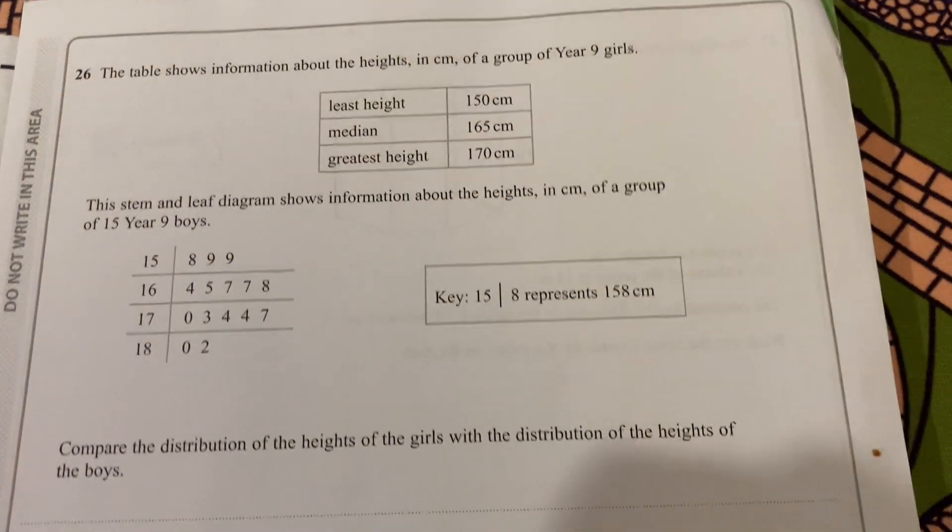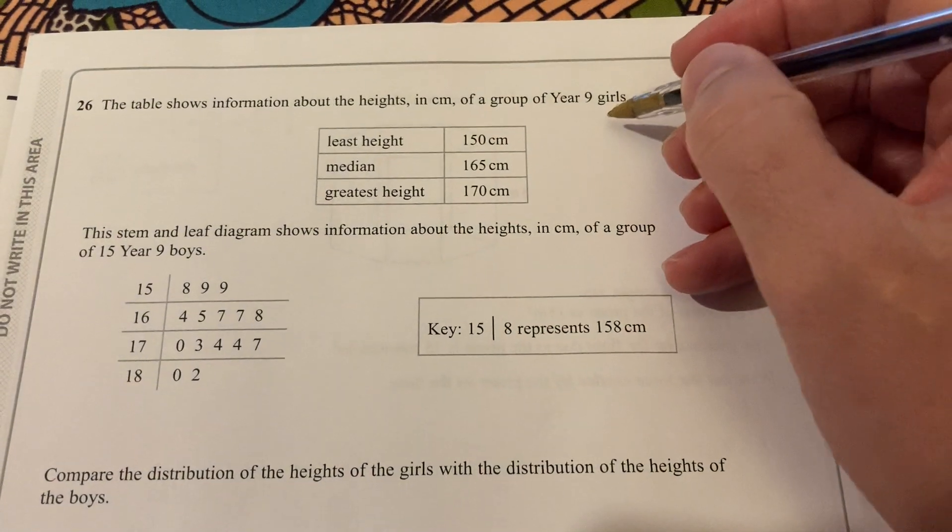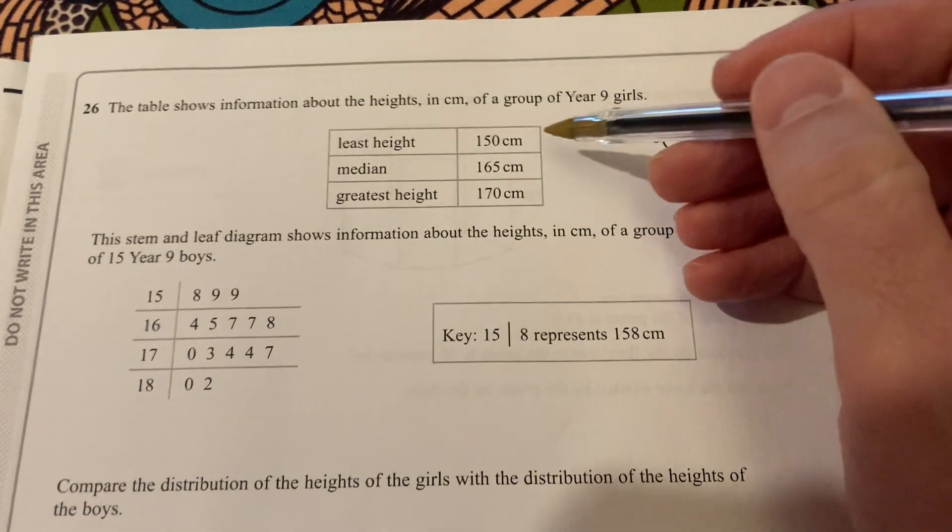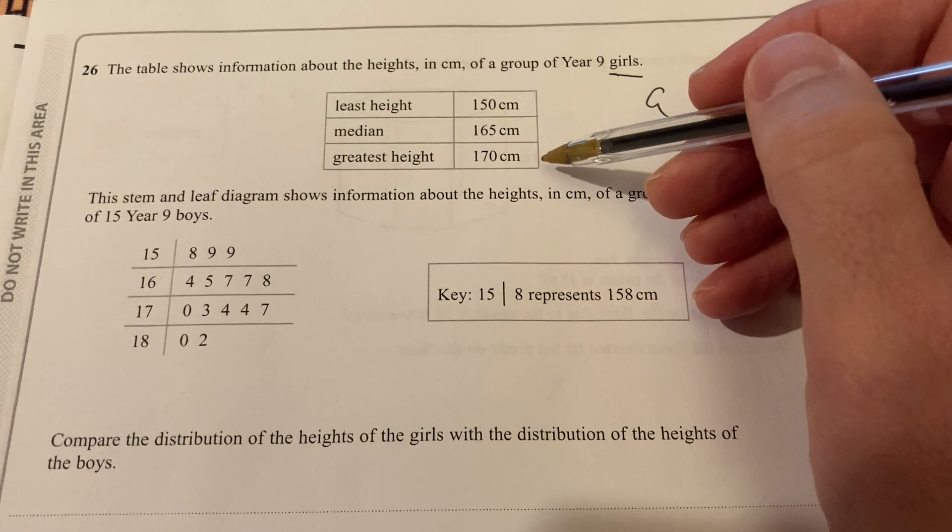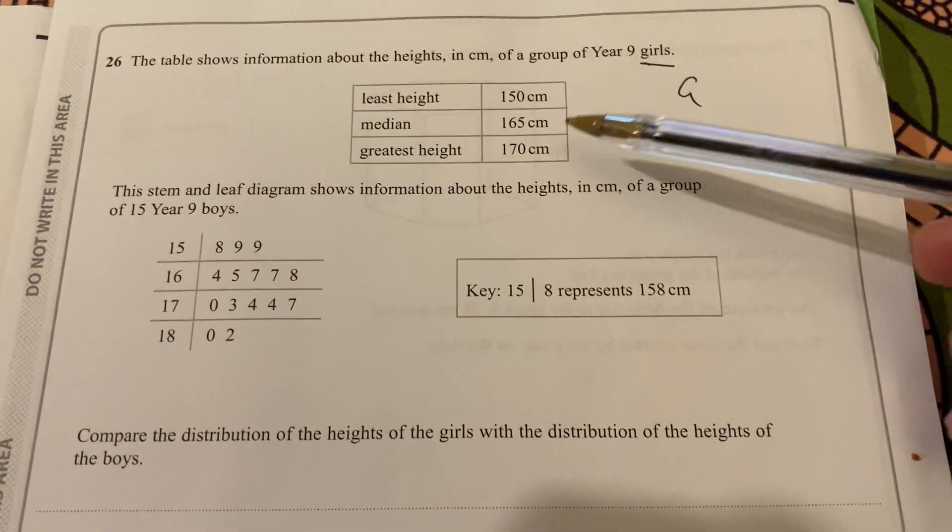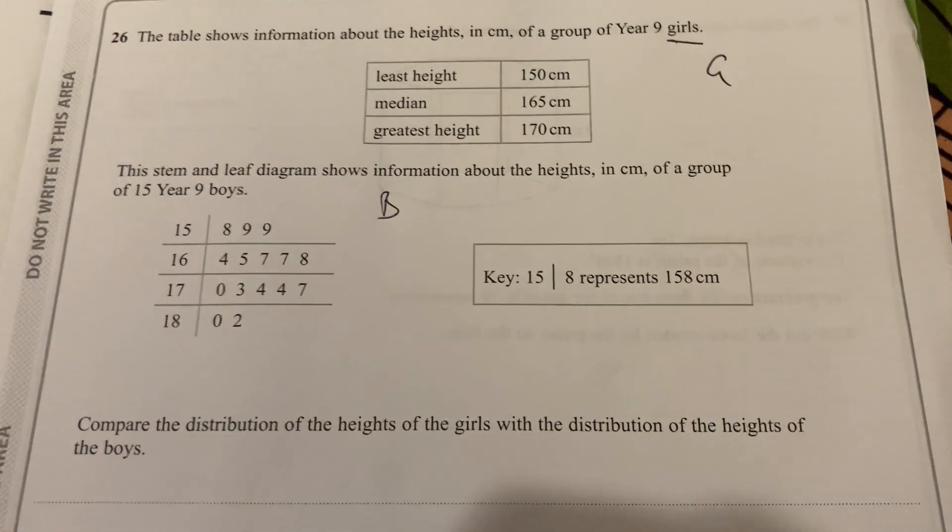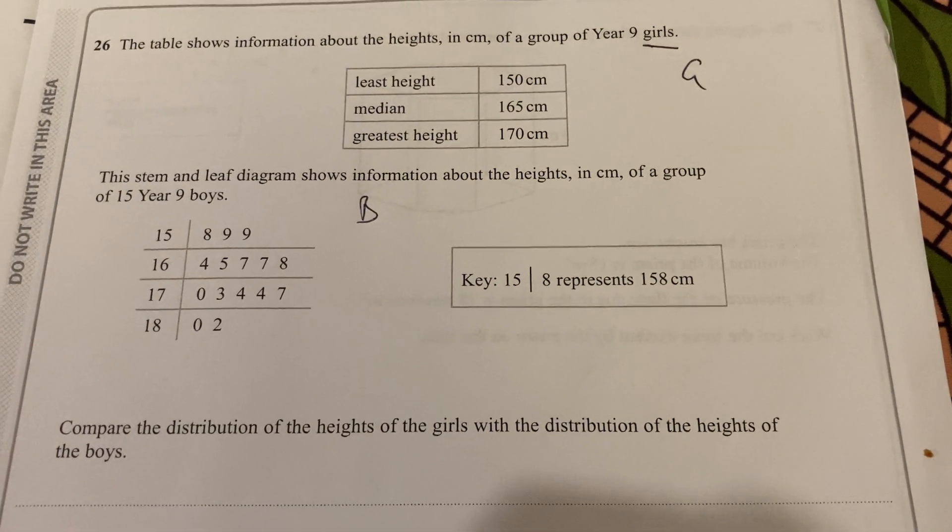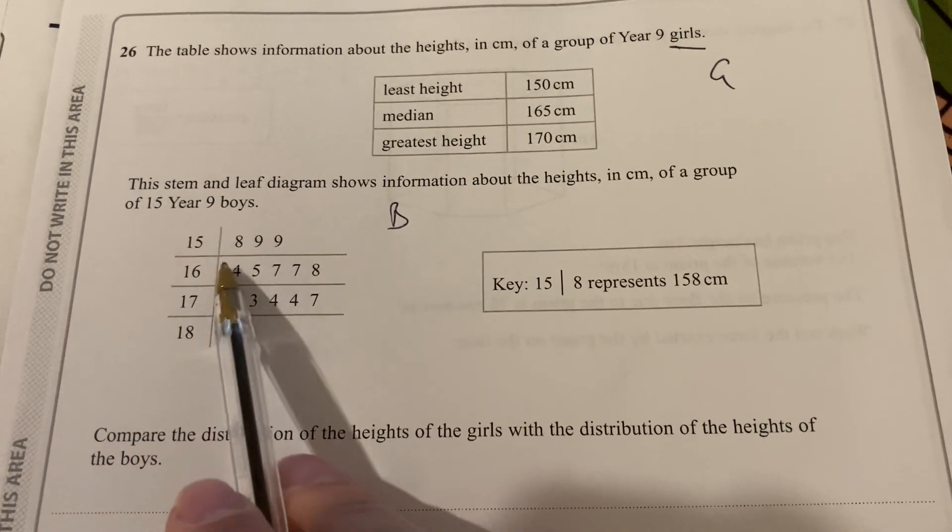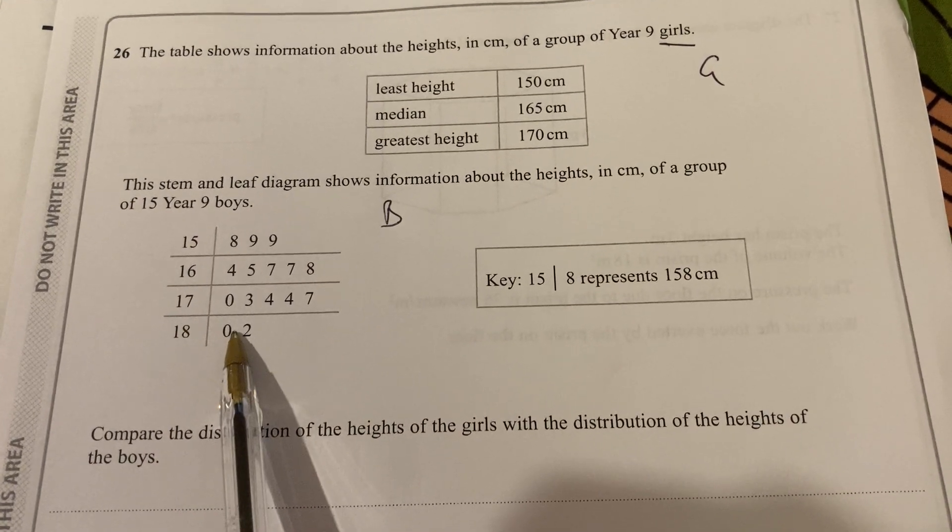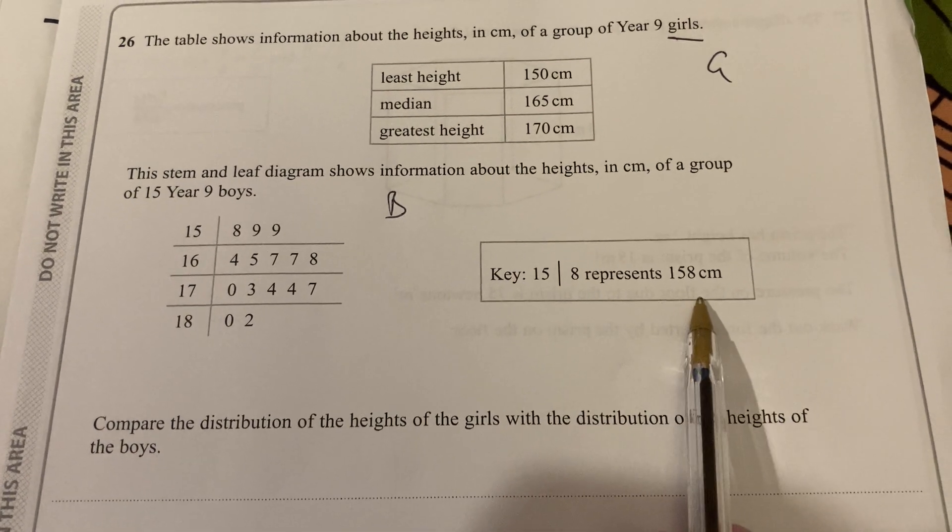So EAB must be 85 degrees. Okay, so the important thing there was to make sure you're showing all the reasons. Angles on a straight line, parallel lines, and triangles in a triangle adding up to 180. But using all the pieces of information that we've given us there. Okay, question 26. The table shows information about the heights in centimetres of a group of year nine girls. The least height, the minimum, is 150 centimetres. The median is 165. And the greatest height is 170.